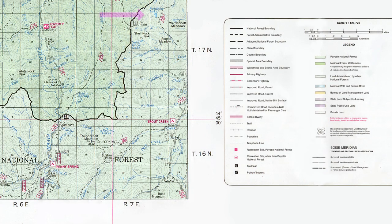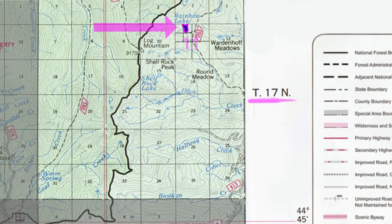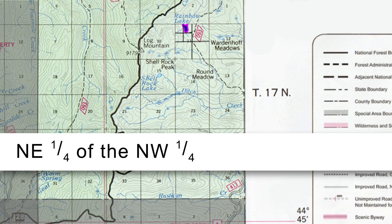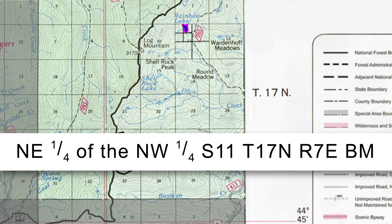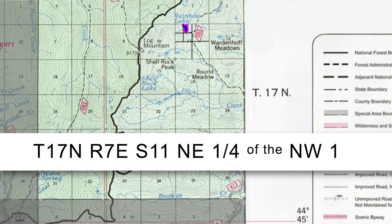Let's do one more example. Say you're trying to tell someone where a water source is, but you're not there. This area has Boise as the initial point, which you can find in the legend of the map. The township is 17 North, and the range is 7 East, which you can see by looking at the sides of the squares. The section is 11. The water source is in the northeast quarter of the northwest quarter. So you would communicate the location as: the northeast quarter of the northwest quarter of Section 11, Township 17 North, Range 7 East, Boise. Alternatively, you might say Township 17 North, Range 7 East, Section 11, northeast quarter of the northwest quarter. And that's it.